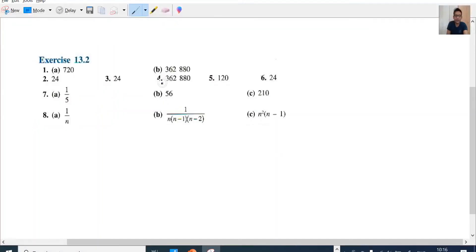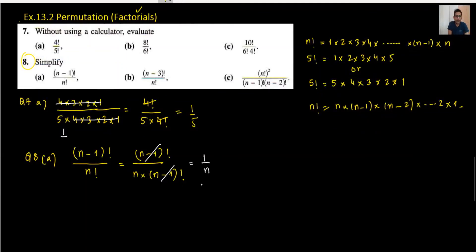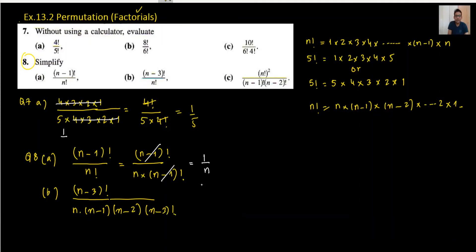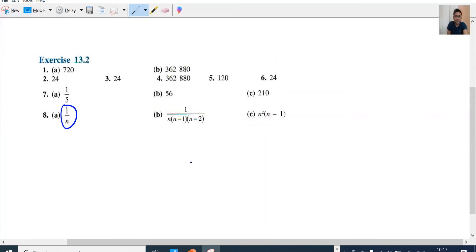We can check the answer — 1 over n is correct. Moving to Part B: we have n minus 3 factorial divided by n factorial. What we can do is write n factorial as n times n minus 1 times n minus 2 times n minus 3 factorial. So the n minus 3 factorial cancels out and we have 1 over n times n minus 1 times n minus 2. That's the right answer.